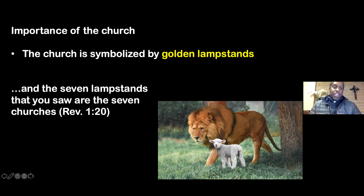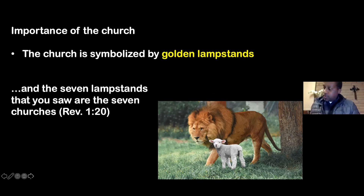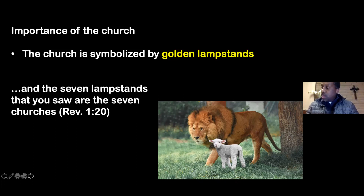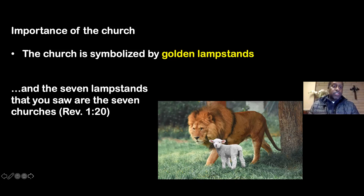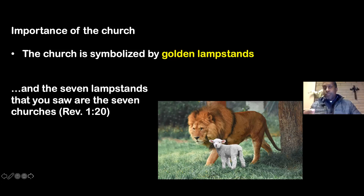In Revelation chapter one, verse 20, it says: 'The mystery of the seven stars which you saw in my right hand, and the seven golden lampstands — the seven stars are the angels of the seven churches, and the seven lampstands which you saw are the seven churches.' So the seven lampstands are the seven churches. The church is symbolized by golden lampstands.